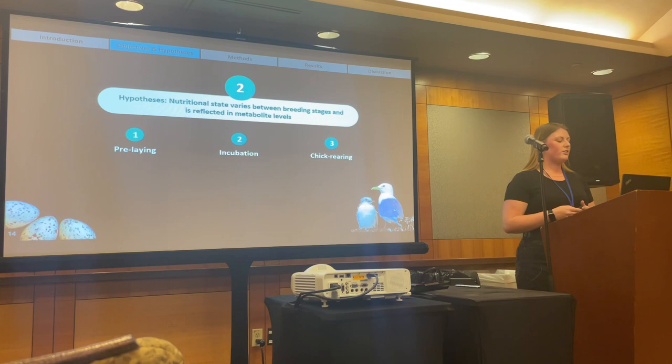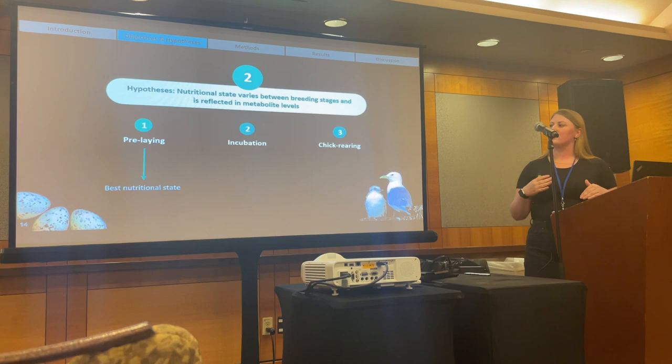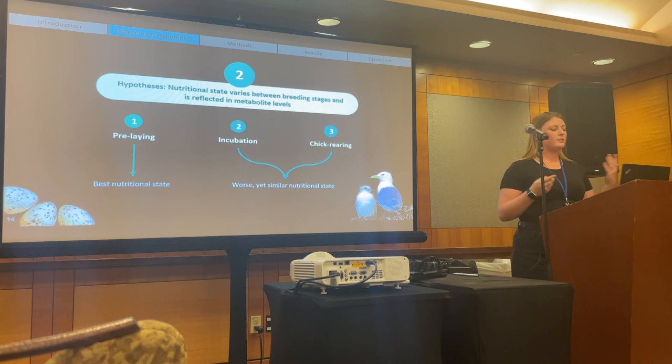We divided the breeding period into three distinct phases: pre-laying, incubation, and chick-rearing. Each stage has unique energetic demands, and we expected our metabolite levels to fluctuate according to those demands and differences in resource allocation. During pre-laying we expected to see the best nutritional state, since individuals have more flexibility to allocate resources to their own self-maintenance, while in subsequent stages energetic demands increase and nutritional state was expected to decline.